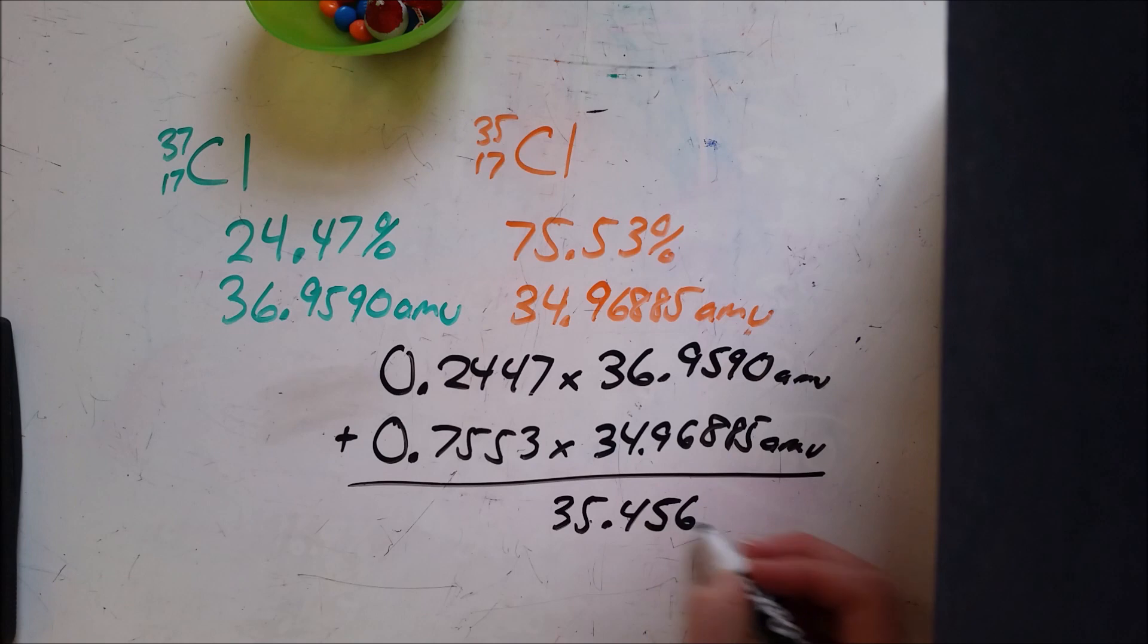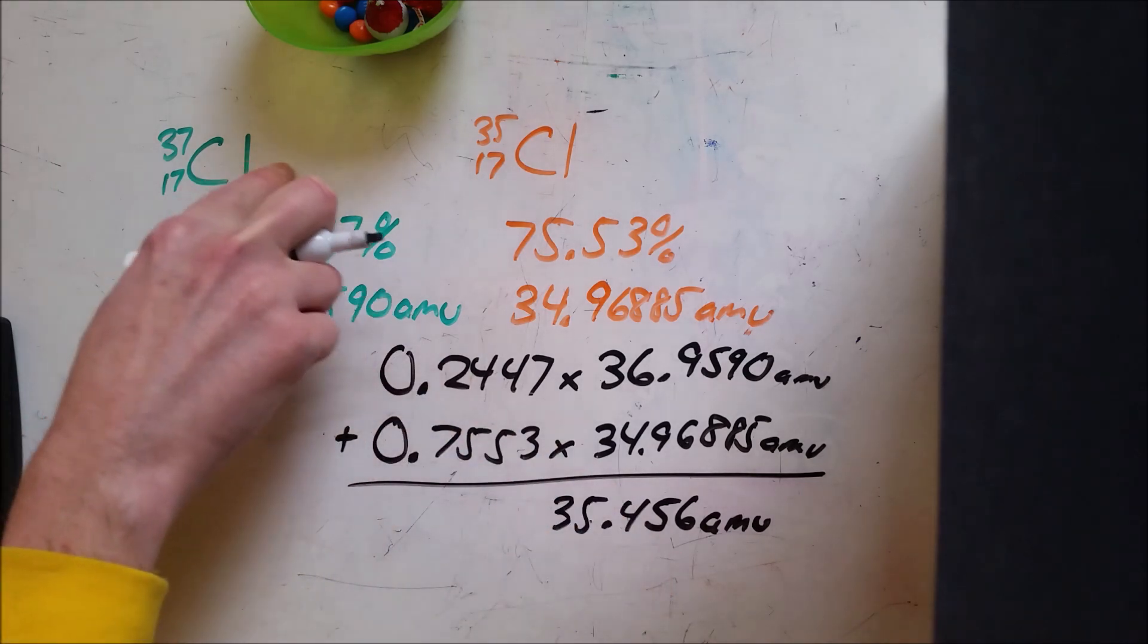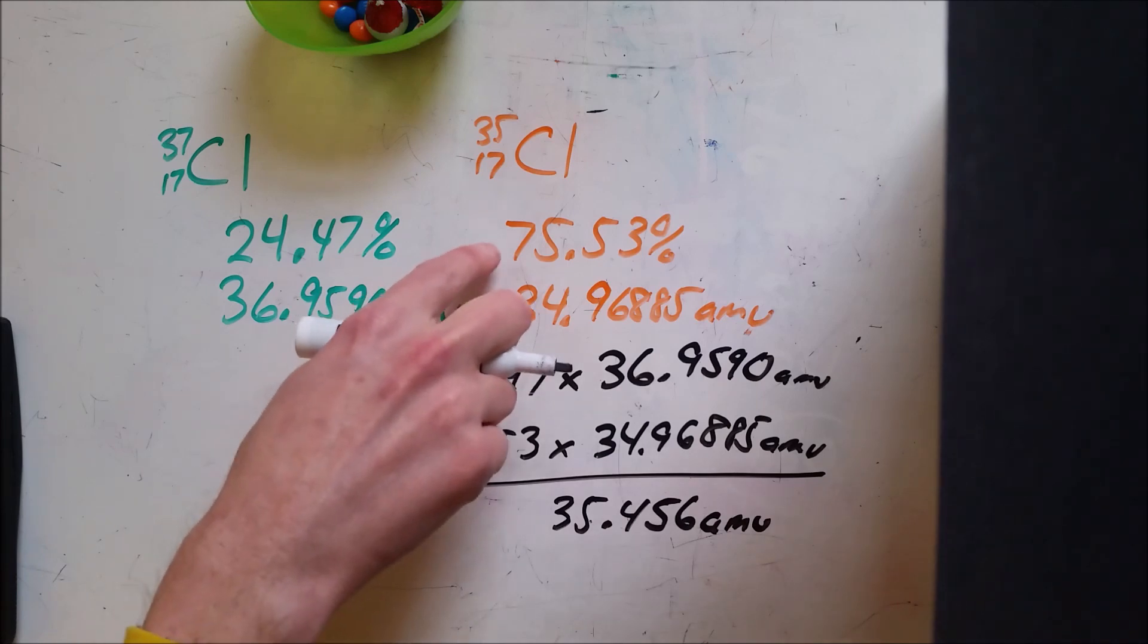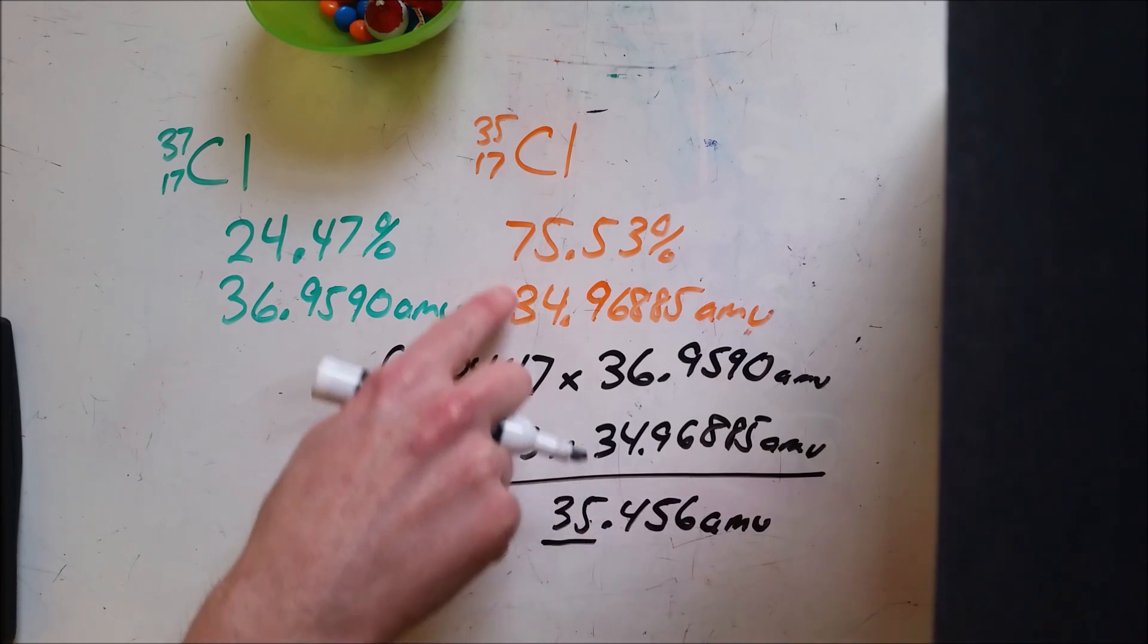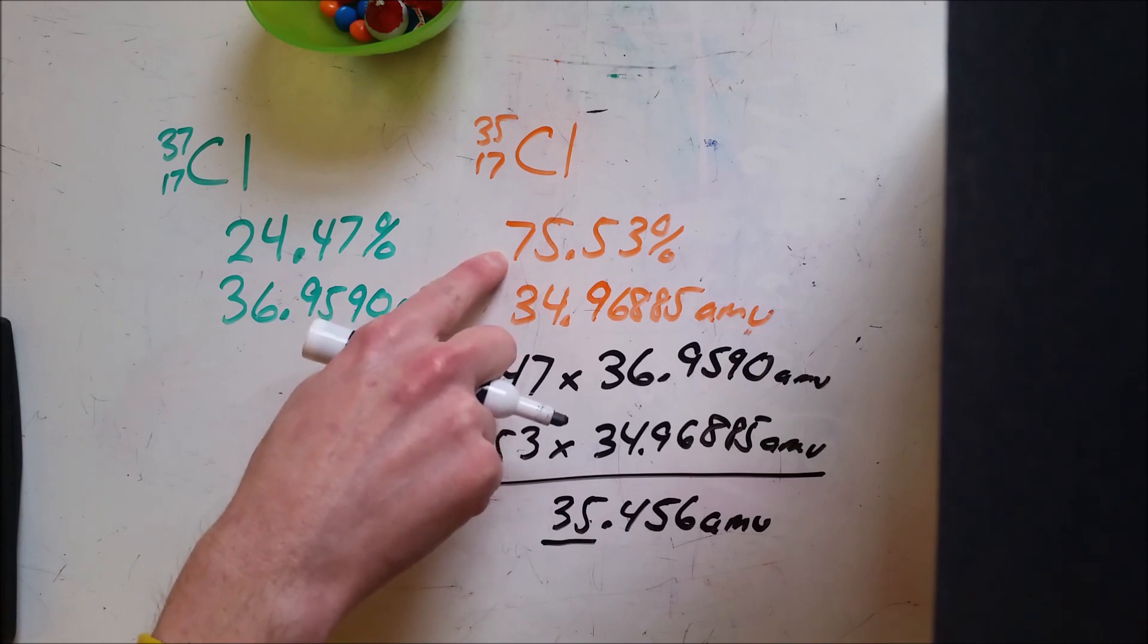You can probably do that rounded one more place, 35.46. So this is the average mass of a chlorine atom that takes into consideration how frequently these each occur. Now you can notice about this that it's closer to 35 than it is to 37 because the 35-mass isotope is more frequently occurring.